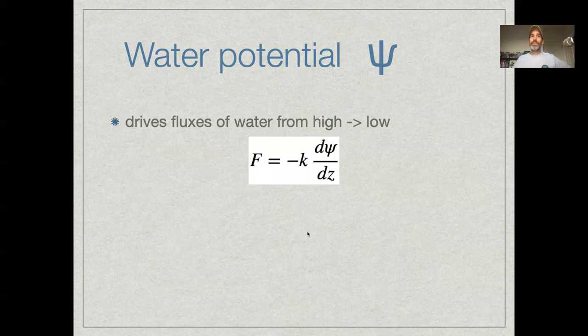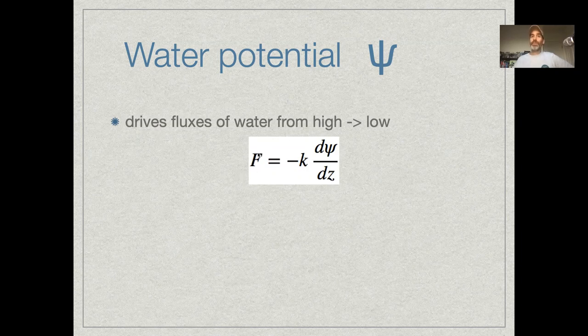So the key to Darcy's Law is this concept of water potential. We have a flux equation where flux change in water content with time, in terms of either volume or mass, depends on a conductivity k, very analogous to a diffusion coefficient but this is the conductivity of the soil, and it depends on this spatial gradient of water potential, dψ/dz.